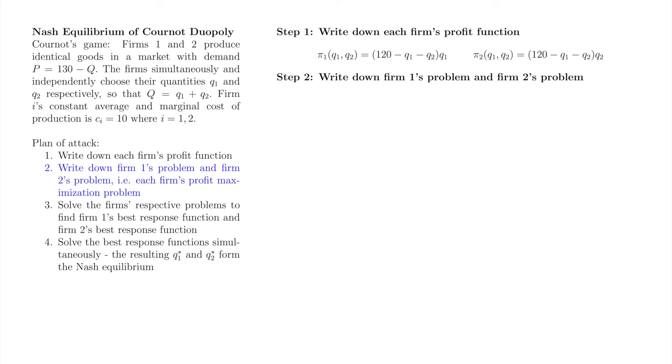Now that we know the firm's profit functions, we need to write down the firm's respective profit maximization problems. We'll write down firm 1's problem first. Firm 1 chooses q1 star which maximizes its profit. The q1 under the argmax indicates that firm 1 chooses q1 but does not choose q2. We'll replace pi1 of q1 q2 with the expression we found in step 1.